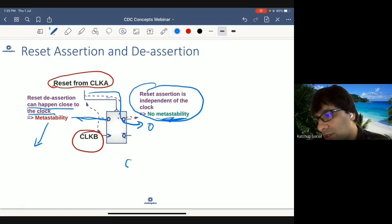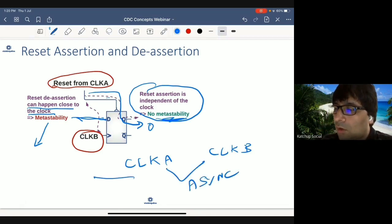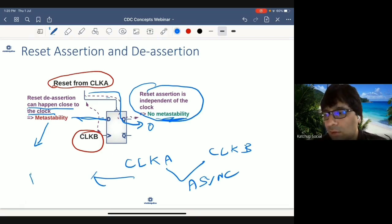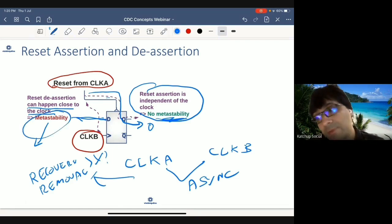Since these are asynchronous clocks, clock A and clock B are synced, you cannot meet recovery and removal time. So metastability can happen. Similar to what we have seen in data path when setup and hold cannot be met, metastability can happen. Here when recovery and removal cannot be met, metastability can happen.